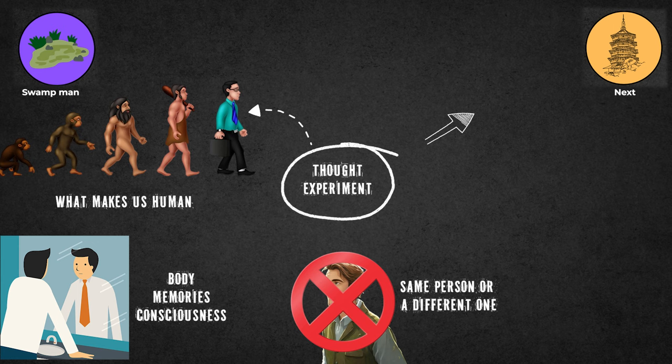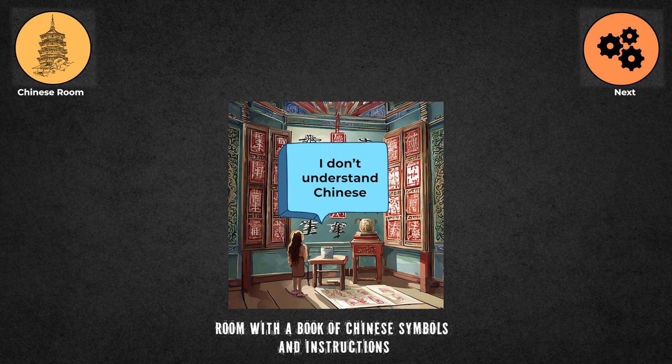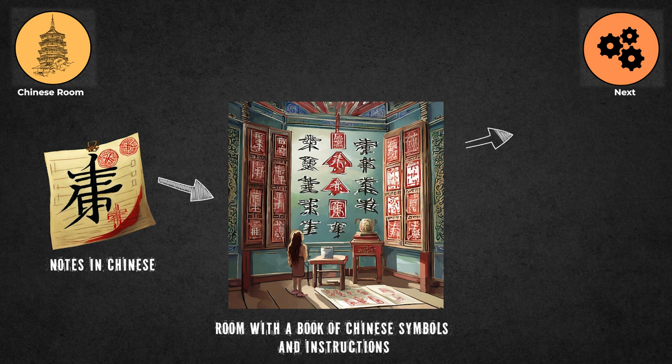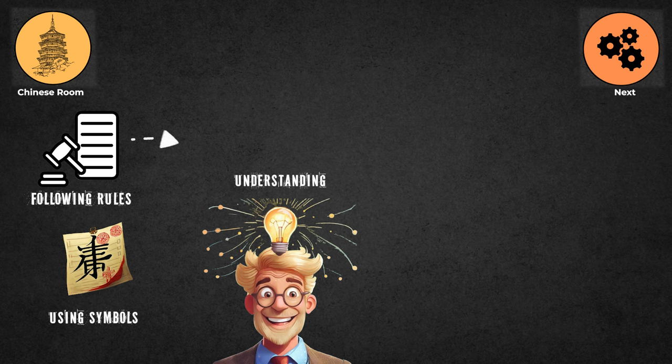The Chinese Room: This experiment asks the question, can a machine understand or mimic language? In the Chinese Room experiment, there's a person who doesn't know Chinese locked in a room with a book of Chinese symbols and instructions. When given notes in Chinese, they respond using the book and instructions, making it seem like they understand Chinese, but they're just following rules and don't really get the language. This makes us wonder if simply following rules and using symbols can truly mean understanding, raising questions about consciousness and whether machines or AI can really understand language like humans do.